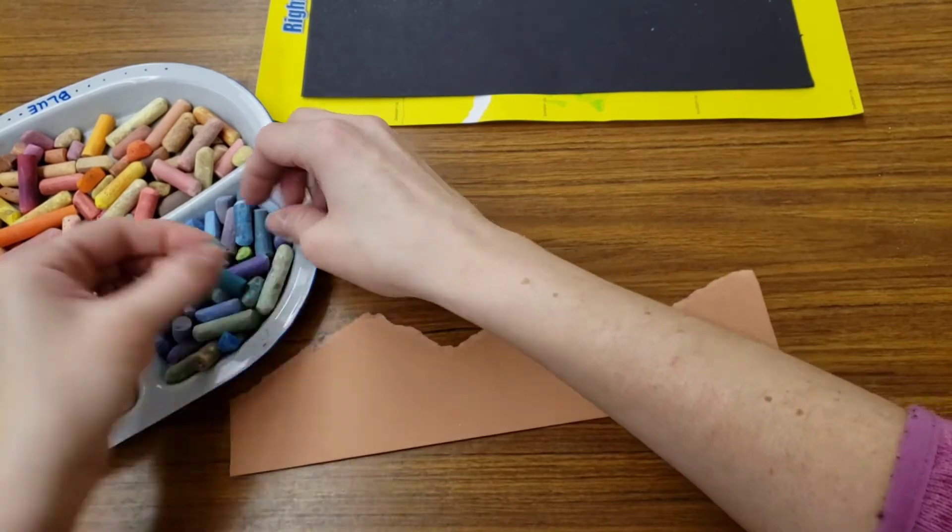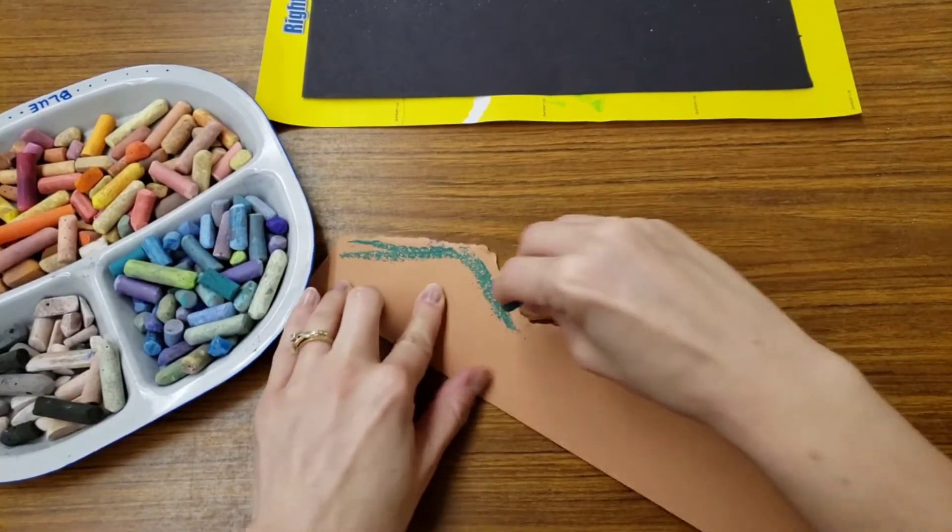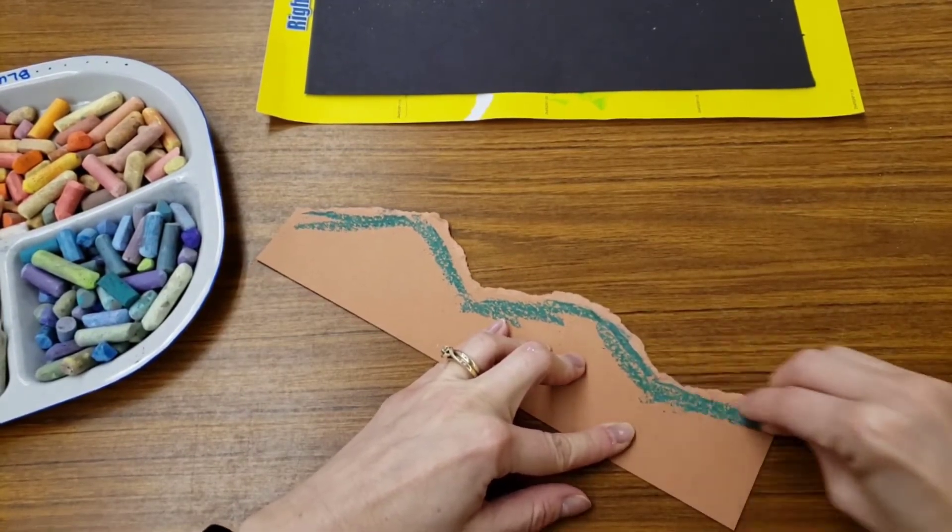So pick a cool color, and we're going to put it near that torn edge. Lay it on really thick. It's okay to be sloppy.